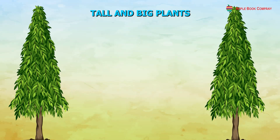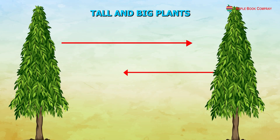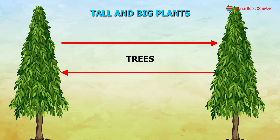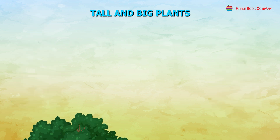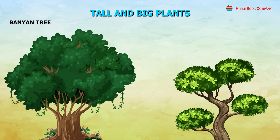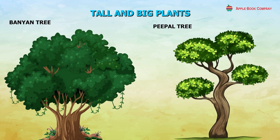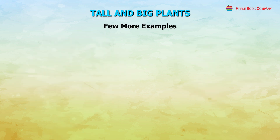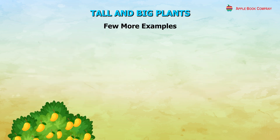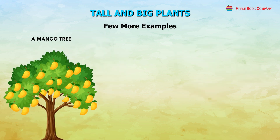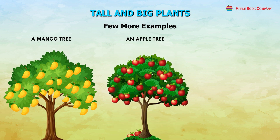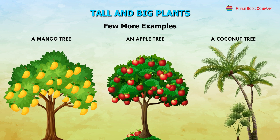Tall and big plants are called trees. Trees like banyan are very big. Here are a few more examples of tall and big plants: a mango tree, an apple tree, a coconut tree.